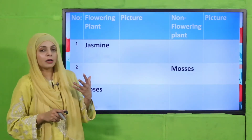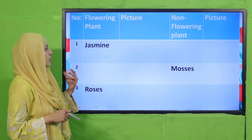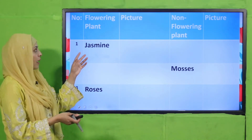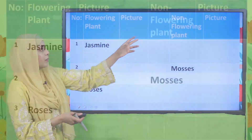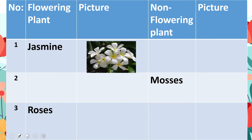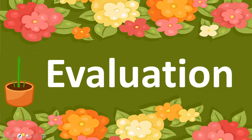Some very common plants you might find in a garden are jasmine and mosses. Jasmine is a flowering plant — paste its picture in the flowering column. Moss is a non-flowering plant — paste its picture in the non-flowering column. Roses are flowering plants — paste their picture accordingly. This is how you will complete the table in your science notebook.